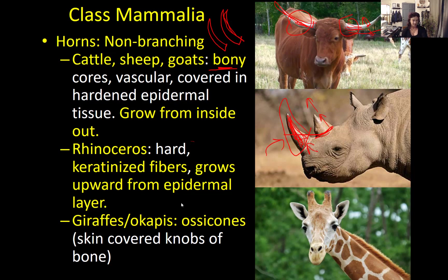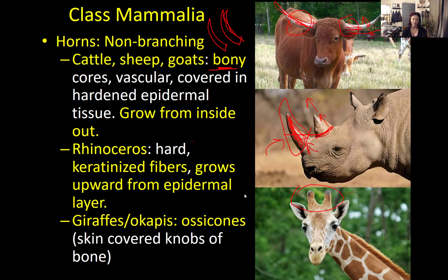Giraffes and okapis have a special kind of horn called an ossicone. Ossicones are made of bone that grows right out of the skull, but they're covered by skin and fur. So while all three are horns, there are three very different types: the bony vascularized horn of cattle/sheep/goats, the solid keratin horn of rhinos, and the skin-covered ossicone of giraffes and okapis.